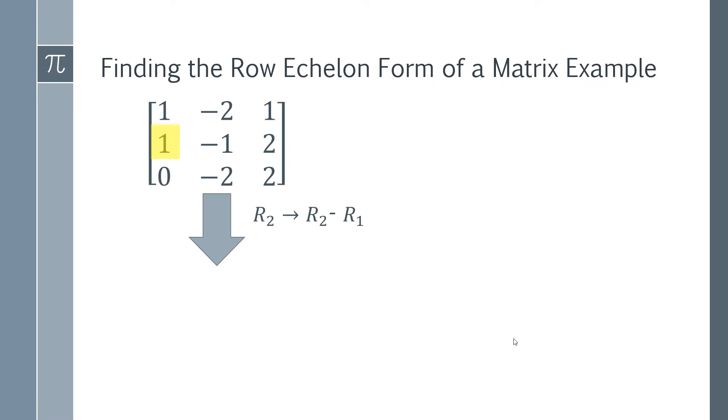What I'm going to do is that row two, the second row, is just going to be row two minus row one. So we're doing row two minus row one. We've got one minus one, which is zero. Then minus one minus minus two, that gives one, and then two minus one is giving one.